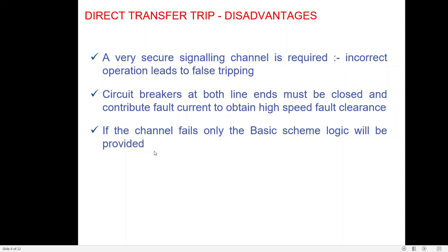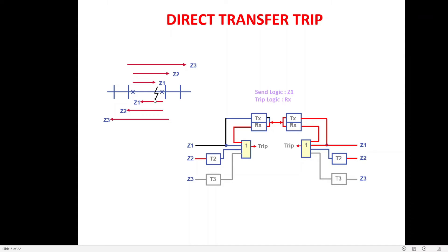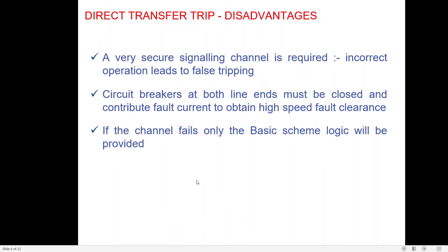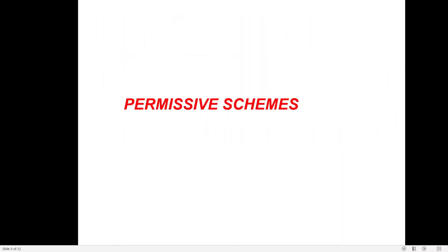The scheme is easy to implement and advantageous for protecting three-terminal lines. The limitations are: a very secure signaling channel is required because incorrect operation leads to false tripping; circuit breakers at both line ends must be closed, since if a breaker is open Zone 1 cannot pick up and no carrier is sent, so tripping at the other end is delayed to Zone 2 timer; and if the channel fails, only basic scheme logic applies.